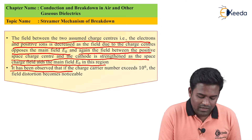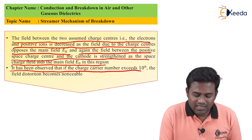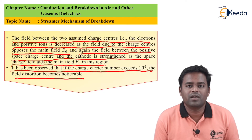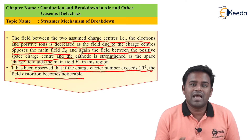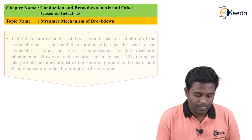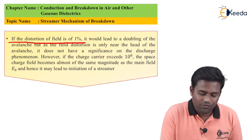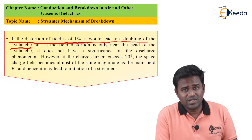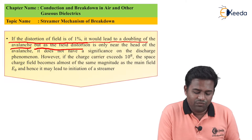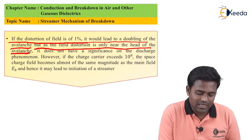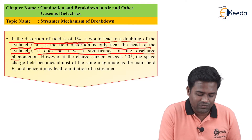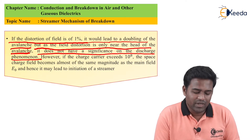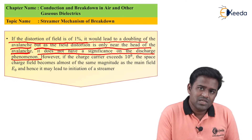It has been observed that if the charge carrier number exceeds 10 raised to 6, the field distortion becomes noticeable. The breakdown will occur if the gas attains a value of 10 raised to 8. If the distortion of field is 1%, it would lead to a doubling of the avalanche, meaning breakdown will occur more readily. However, as the field distortion is only near the head of the avalanche, it does not have a significant effect on the discharge phenomenon — the discharge phenomenon will be small in this case.